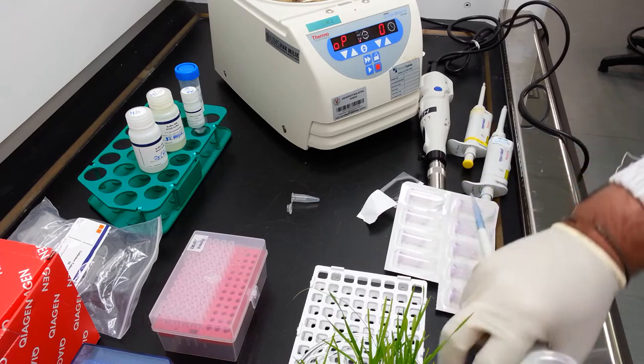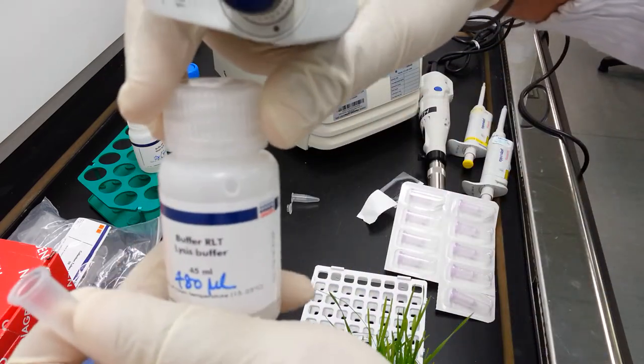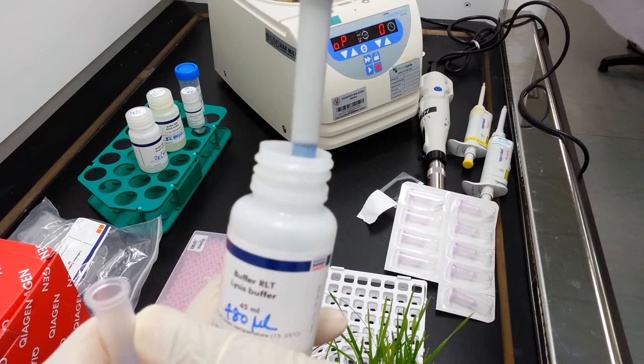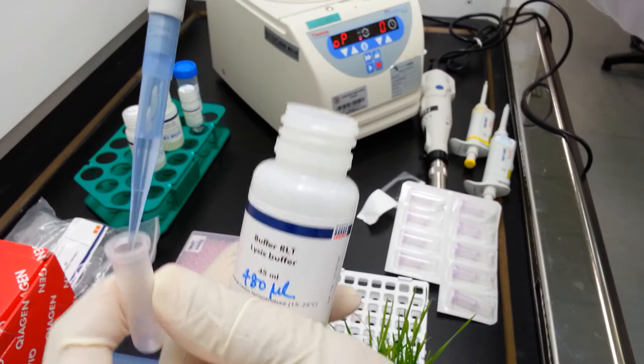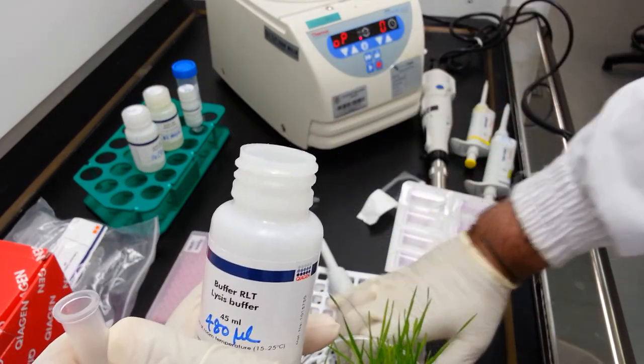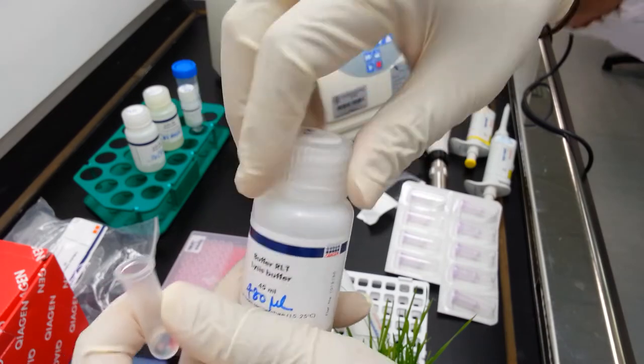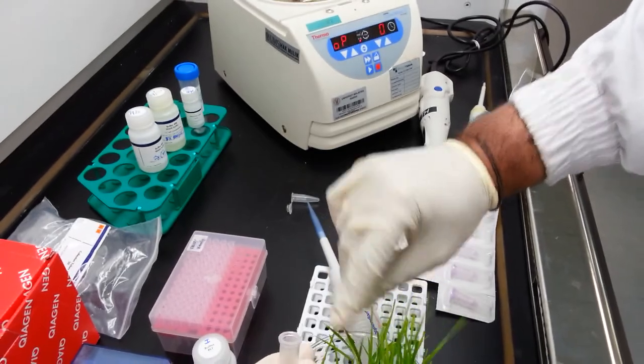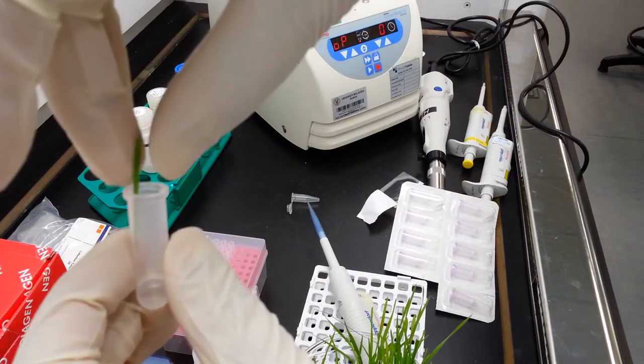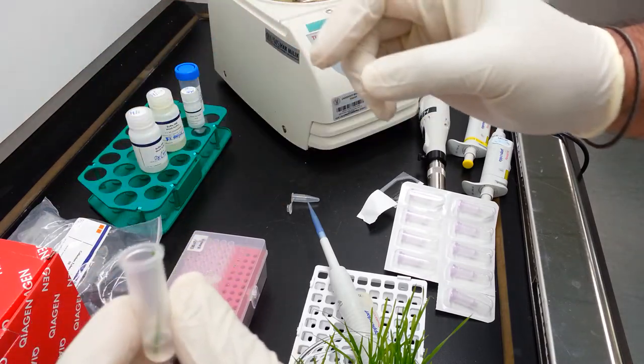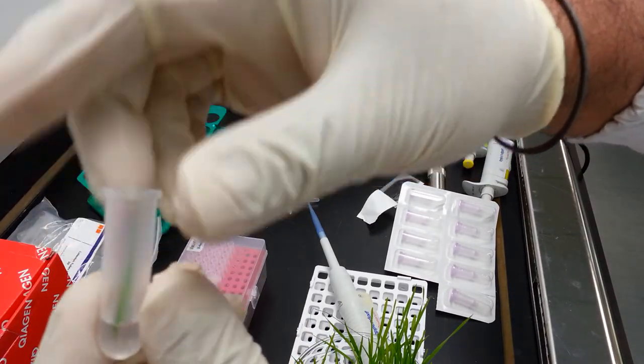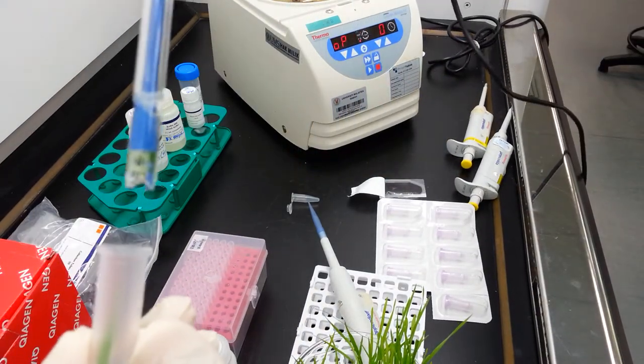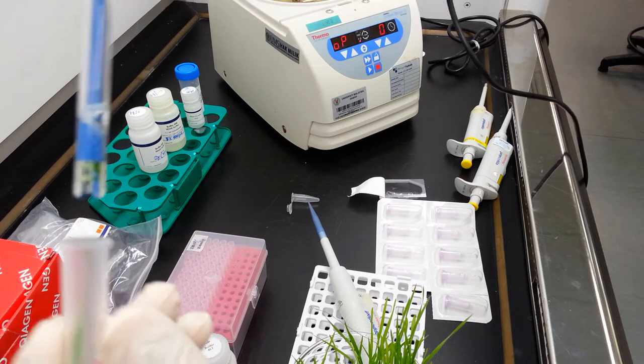To begin, transfer 480 microliters of buffer RLT into a tube. You may transfer a small section of your tissue sample into this tube. Homogenization of the sample tissue can be done using a warring blender or a homogenizer. In this case, we will be using a motorized blender.